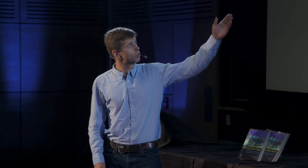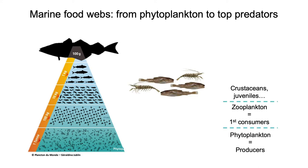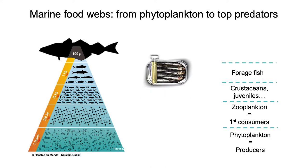Then the zooplankton consumes phytoplankton. Then, in the next level, there are a mixed group of species with crustacean juveniles. In the next level, there are several groups of small fish, like mackerel or sardines.